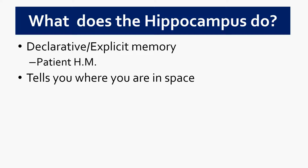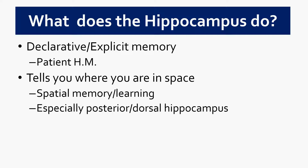The hippocampus also does something else that's really important: it tells you where you are in space — where you are in the world relative to other things. This is what we call spatial memory. This is particularly important in the posterior and dorsal hippocampus. There are celebrated studies showing that taxi drivers who learned to navigate before GPS had a slightly larger posterior hippocampus, thought to reflect the greater spatial knowledge they had to acquire.